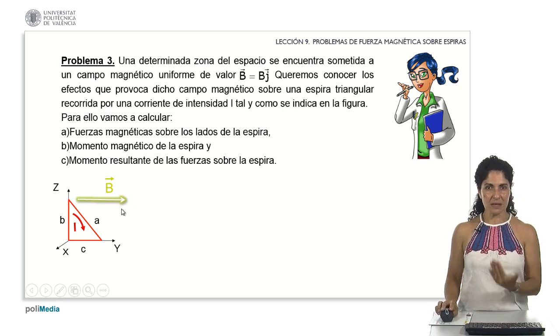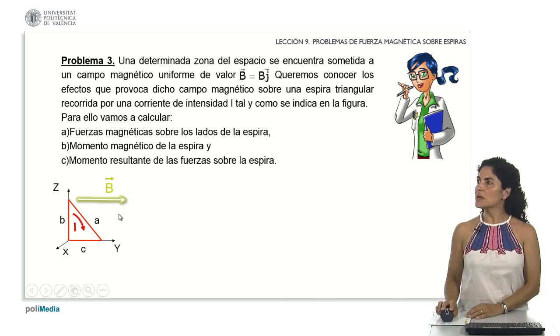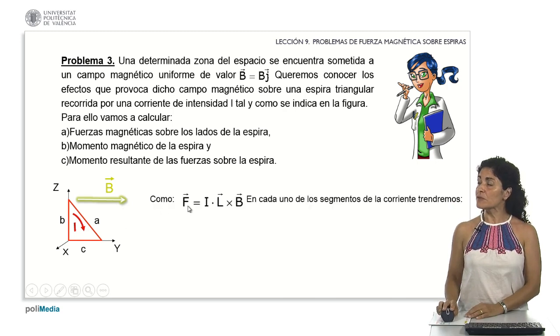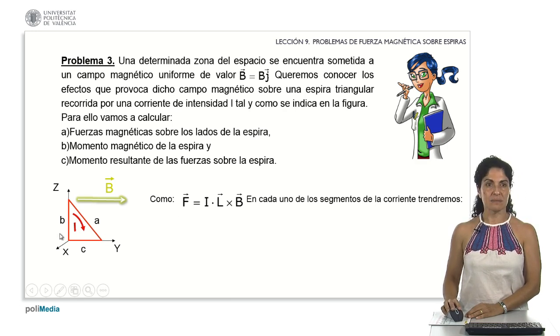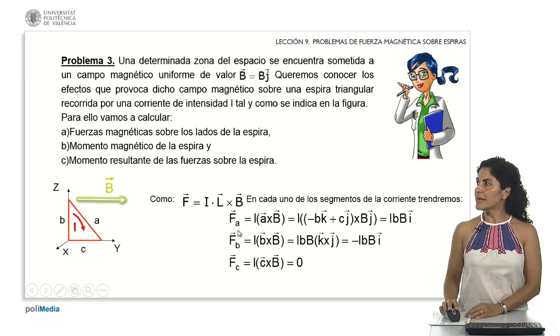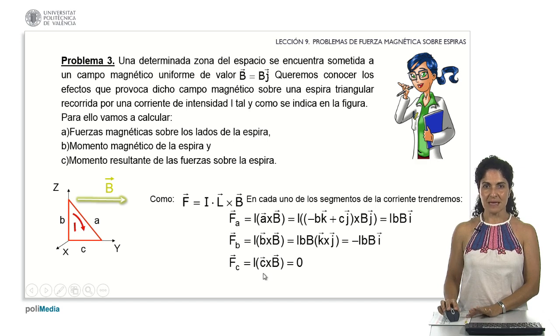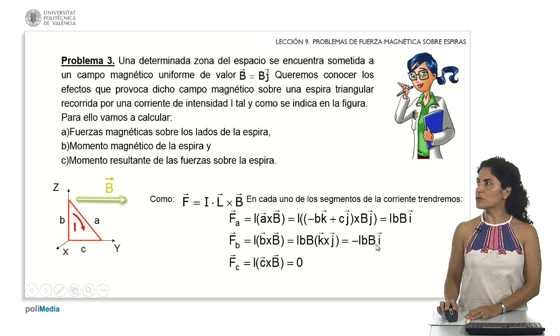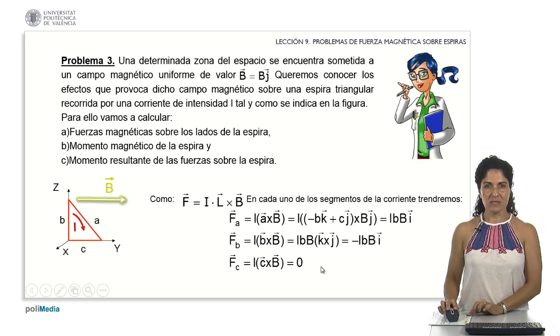Let's begin to analyze everything that we have been analyzing in the theory part. Considering these are straight conductors, as depicted in the diagram, I can apply the simplification. The resulting expressions for the forces acting on segment A, segment C, and segment B yield these specific outcomes. It's crucial to consider the vector expressions of A, B, and C for a comprehensive understanding of these forces and their corresponding vectors.